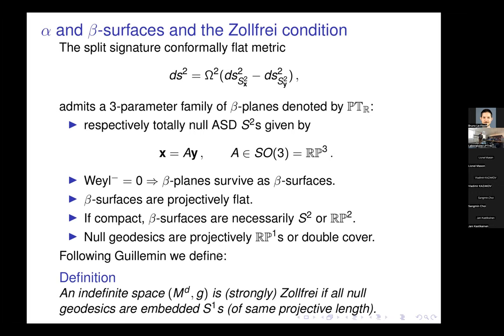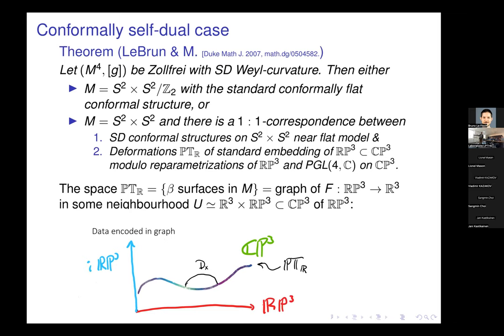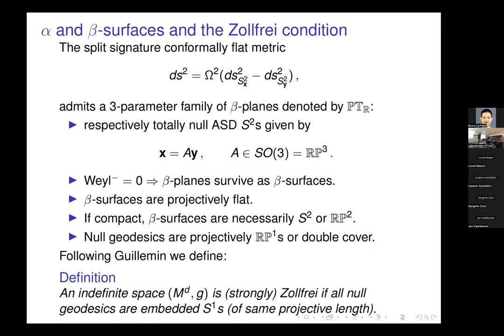Furthermore, all null geodesics — if we have these beta-surfaces as S2s or RP2s — are circles, which is a remarkable and very special structure to have. Following Gielman, who studied this kind of structure in the 80s, he defined a metric of indefinite signature to be Zoll if all null geodesics are embedded circles. We will essentially have two cases where the circle goes around once or twice in its projective class.